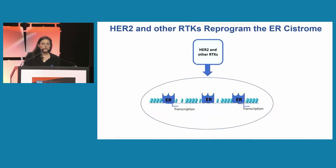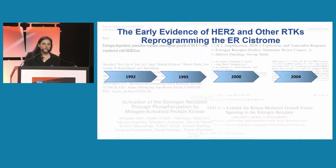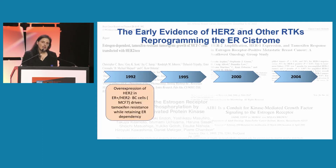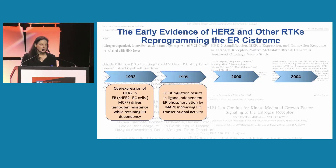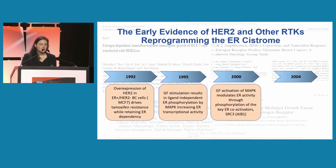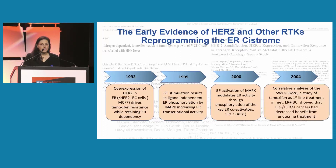HER2 and other receptor tyrosine kinases also reprogram the ER cistrome. Evidence for this was shown already in 1992, when Kent Osborne's group showed that overexpression of HER2 in ER-positive HER2-negative breast cancer drives tamoxifen resistance while retaining ER dependency. Mechanistically, growth factor stimulation results in ligand-independent ER phosphorylation by MAP kinase, increasing ER transcriptional activity. In addition, MAP kinase modulates ER activity through phosphorylation of key coactivators such as SRC3, also called AIB1. Clinically, the correlative analysis of the SWOG-8228 trial showed that ER-positive tumors that were HER2-positive had a decreased benefit from endocrine treatment.